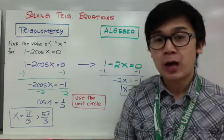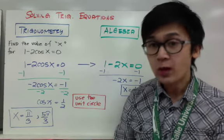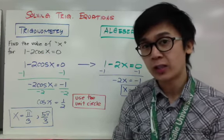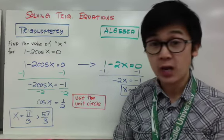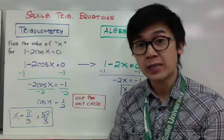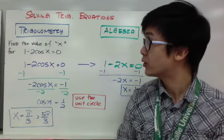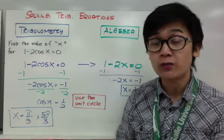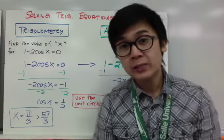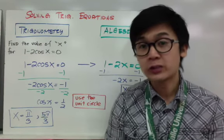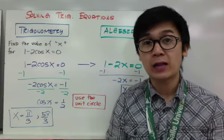In the first example, we have a trig function. We are no longer using just x and y in a quadratic or linear equation — now we're using sine, cosine, tangent, cotangent, and so on. Don't get too intimidated with the new notations because you can relate them to algebra.